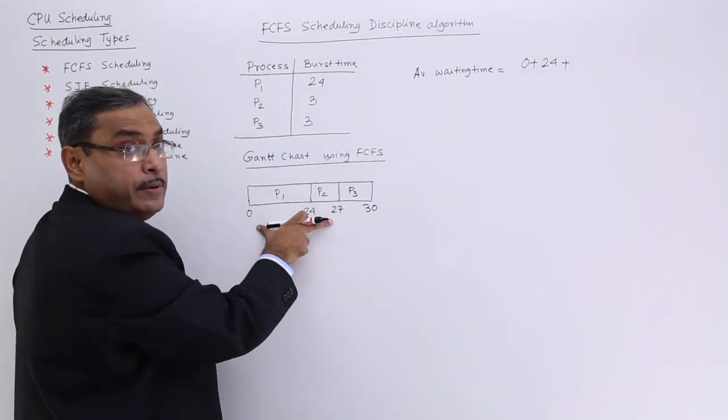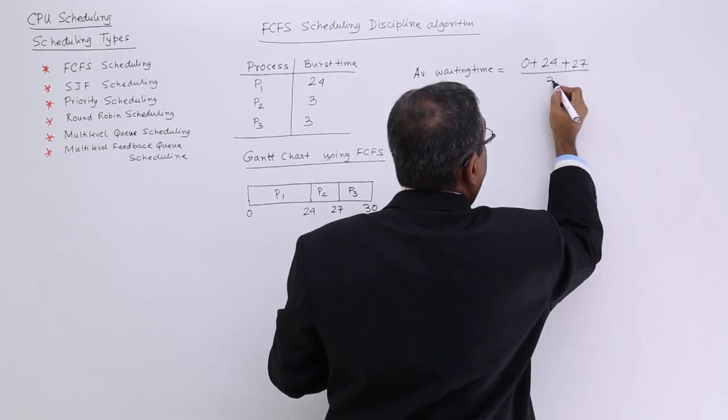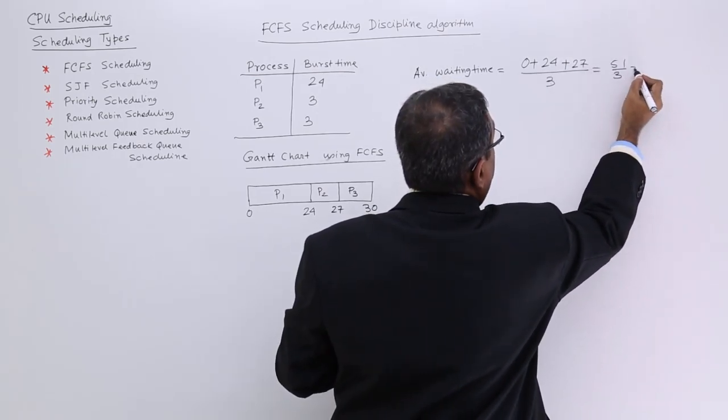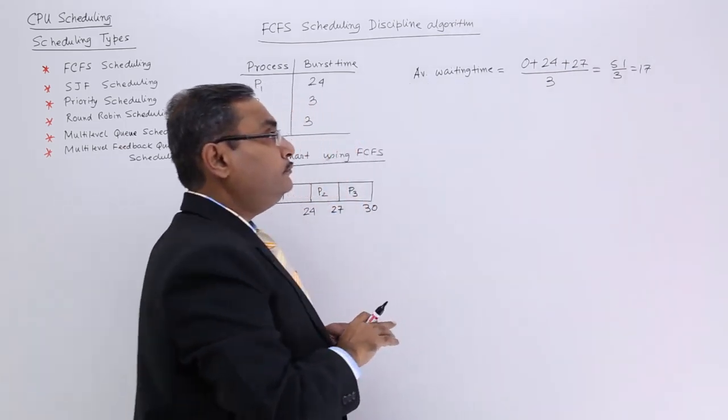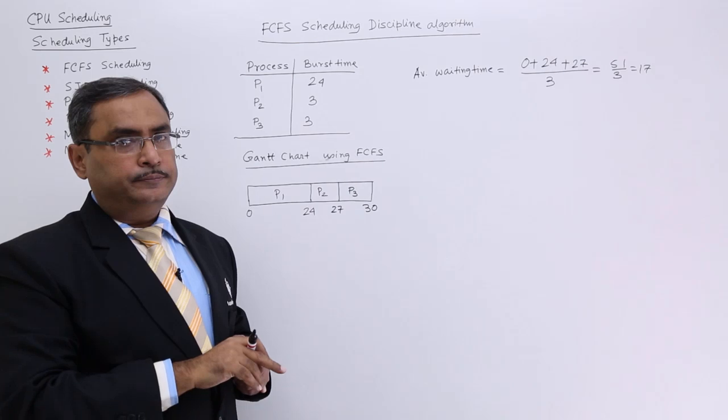For P3, the waiting time is 27. If you calculate the average, it comes to 17. In this way, the average waiting time can be calculated.